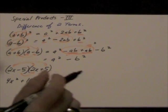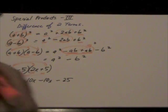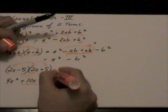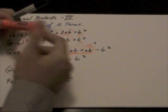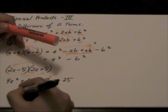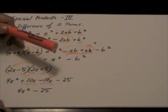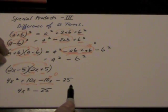So, what we get here though, is if we look at this middle term, positive 10 minus 10x, this becomes zero. And all I'm left with, 4x squared minus 25. I don't have that middle term to worry about.